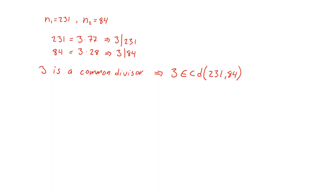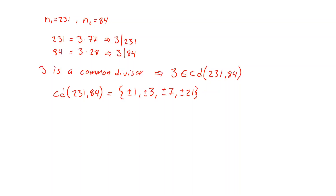If we look at all the common divisors, we can start by factoring the two numbers, and we will see that the common divisors of 231 and 84 is the set that includes plus or minus 1, plus or minus 3, plus or minus 7, and plus or minus 21. So these are all the common divisors of 231 and 84. From this, we can see that the greatest common divisor between 231 and 84 is the largest number in this set, which is 21.